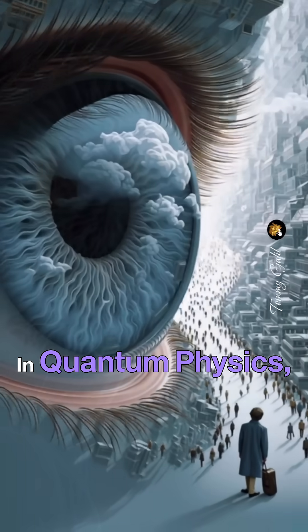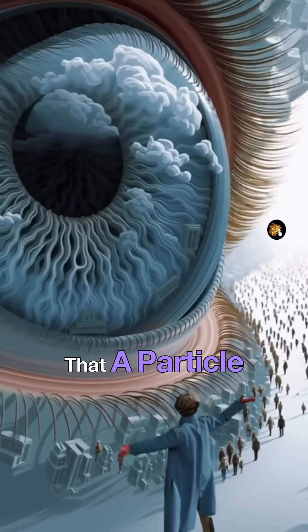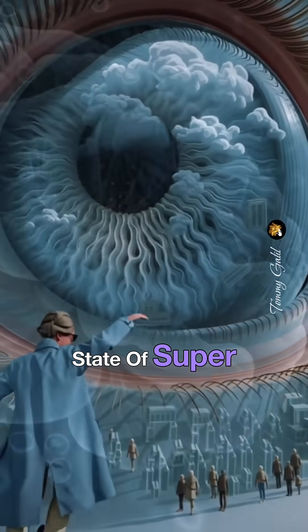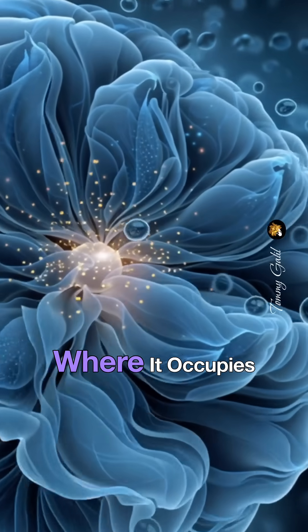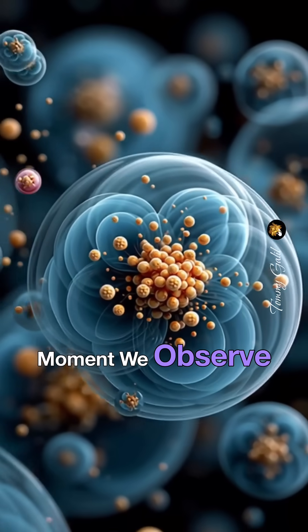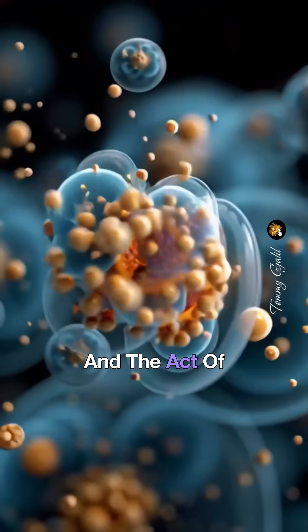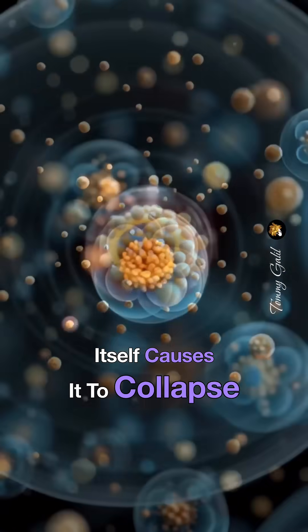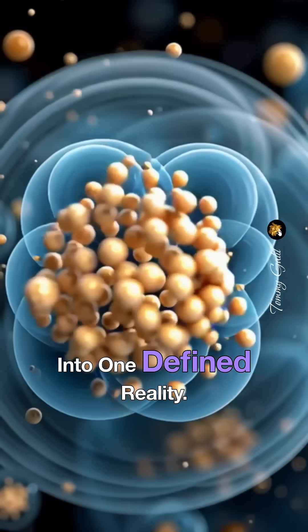In quantum physics, we've learned that a particle can exist in a state of superposition, where it occupies multiple possibilities at once until the very moment we observe it, and the act of observation itself causes it to collapse into one defined reality.